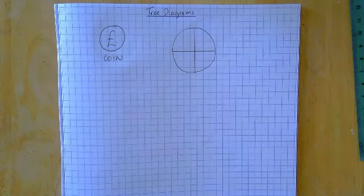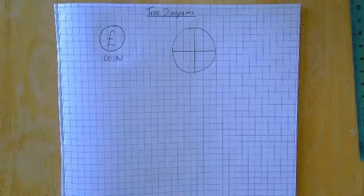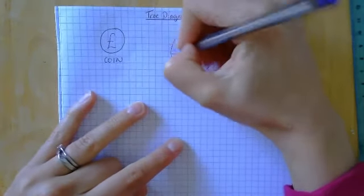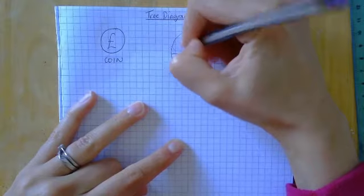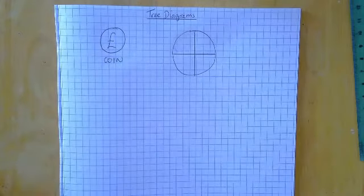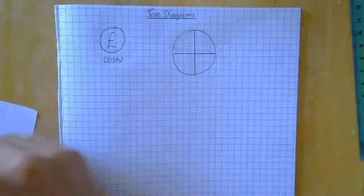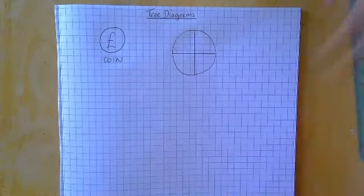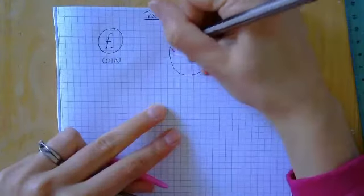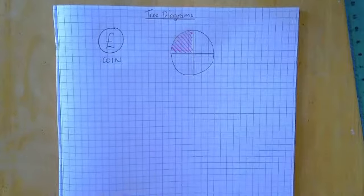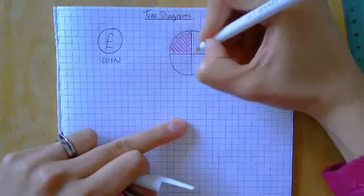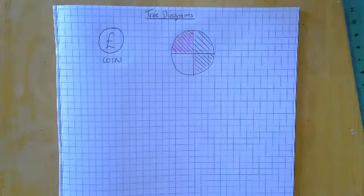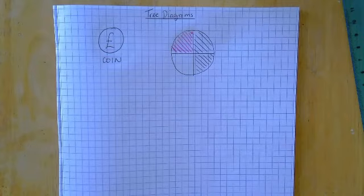I'm going to have a purple section — actually, my purple pen isn't going to work, so I'll have a pink section instead, two black sections, and a white section. So I've got a pink, two black, and a white.